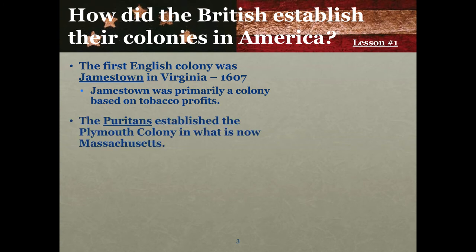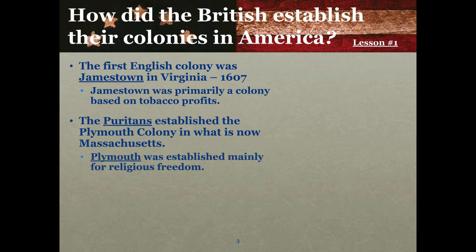The Puritans, which was a religious group, established the Plymouth colony in what is now Massachusetts. The Jamestown colony was established for profit; the Plymouth colony in Massachusetts, which was much farther north and therefore colder, was established for religious freedom. The Puritans wanted the right to practice their faith freely, which they did not feel they could do in England. They did not want to follow the Church of England, which was the official church in England.